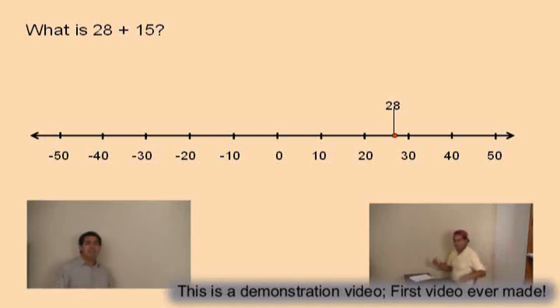All right, Charlie. 28 plus 15. Now, Charlie, explain to us. Okay, we're at 28. We're going to move right how far? 15. Okay, Charlie, so how would you do this? Remember, everybody thinks differently when they do addition on a number line. So Charlie, give us a recommendation.